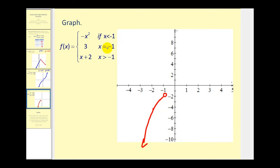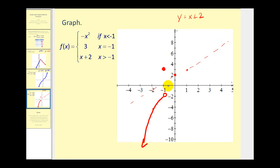The second rule places the single point negative one comma three on the graph — that's a closed dot at that location. For the third piece, y equals x plus two has a y-intercept of positive two and a slope of positive one, so we go up one right one to sketch a dashed line. We want this line when x is greater than negative one. At x equals negative one, y would be positive one on the line, so we place an open circle there and keep the piece to the right, erasing the piece to the left.